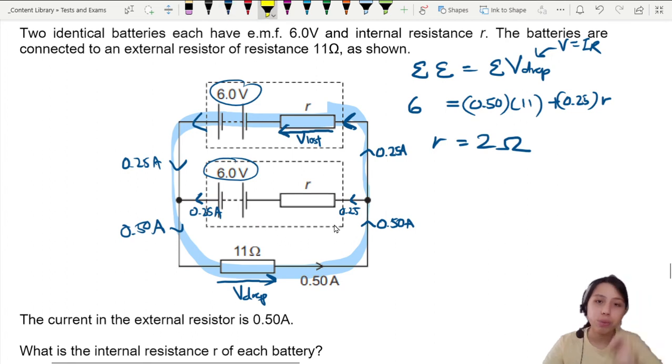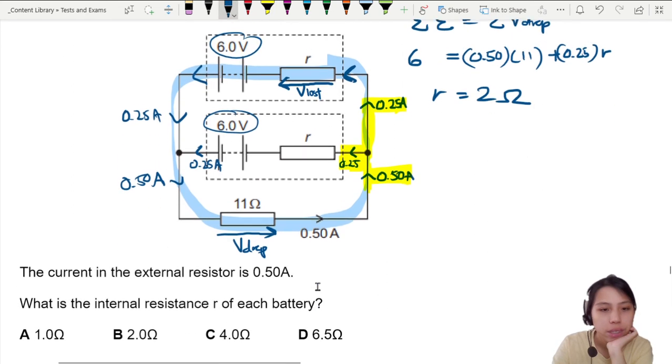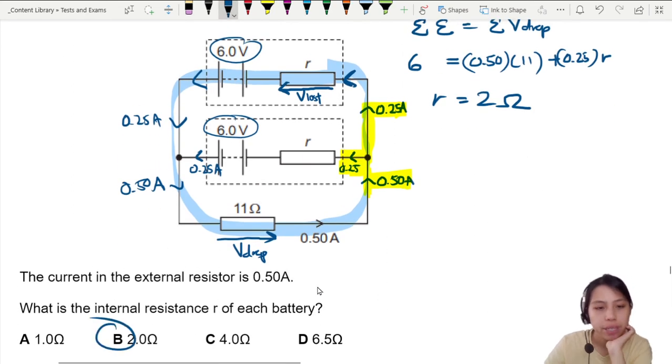I'm going to highlight the point where we missed out—current at junctions. What happens? Be careful. So 2 Ohms is how we can find this question. B is the best choice.